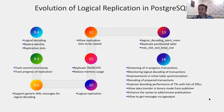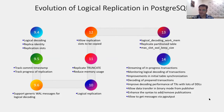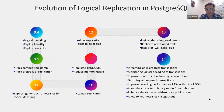PostgreSQL 14 brought in quite a few features to further enhance this solution: streaming of in-progress transactions, monitoring of logical decoding of transactions, improved initial table synchronization, decoding of prepared transactions, improved performance when there are a lot of DDLs in the system, the ability to transfer data in binary mode, and new syntax to ease users in setting up logical replication.